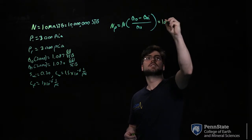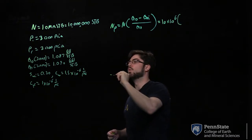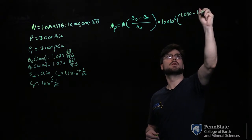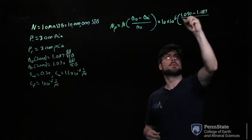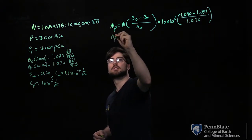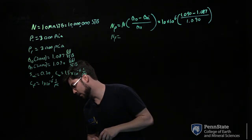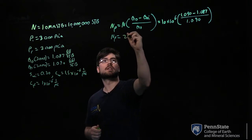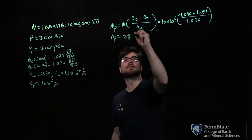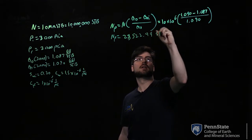Plugging in the values, we have 10 times 10 to the 6 times (1.090 minus 1.087) divided by 1.090. When we calculate this, the cumulative oil production is 27,522.94 STB.